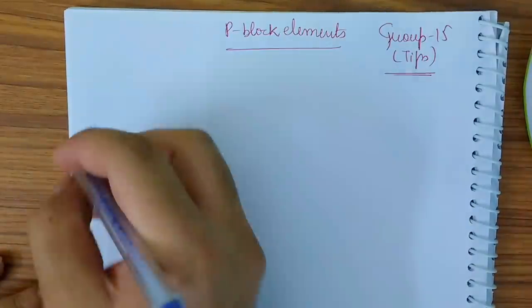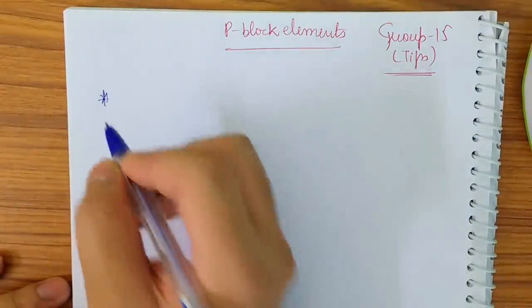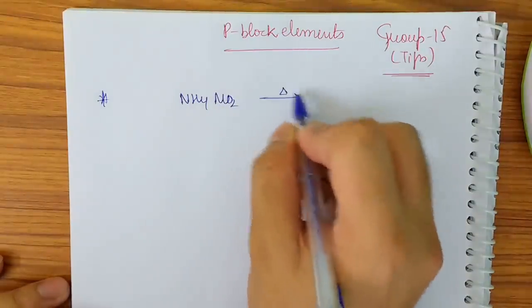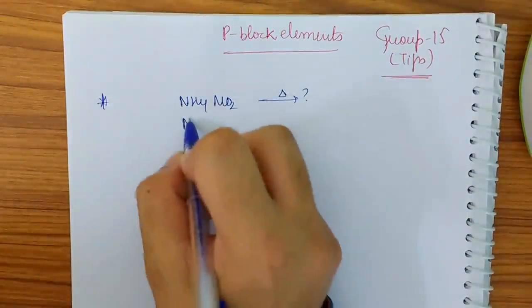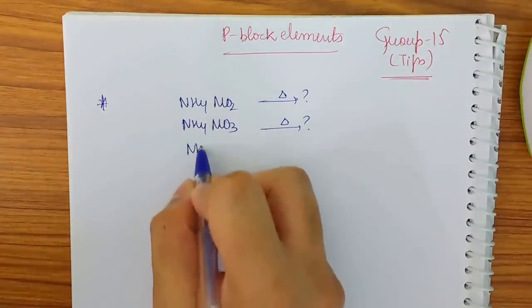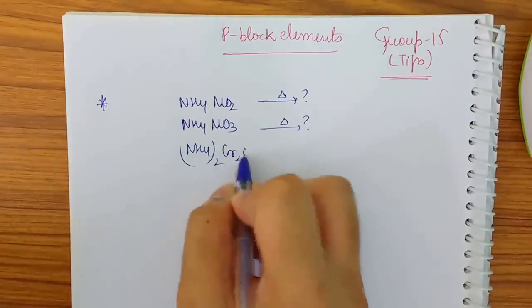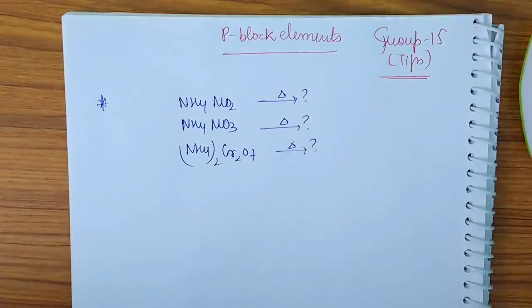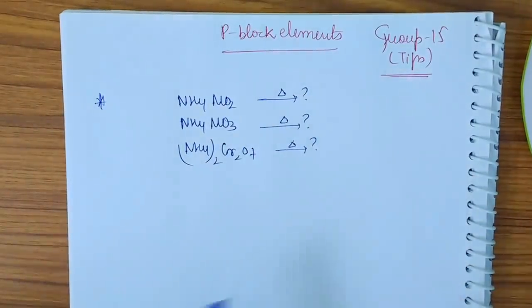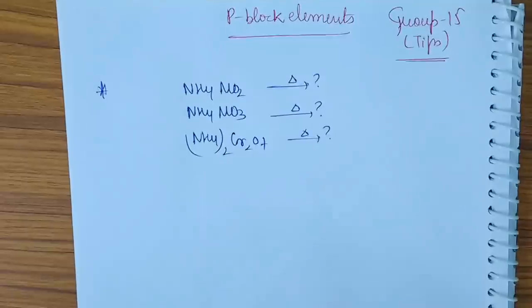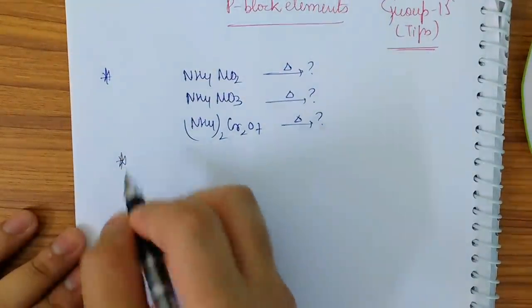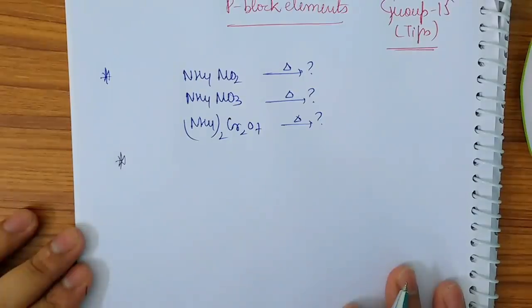Let me begin with some tips regarding this group. First of all, you must have seen questions where it's written NH4NO2 on heating gives what gas, NH4NO3 on heating gives what gas, (NH4)2Cr2O7 on heating gives what gas. Now what we actually do is learn the gases that this gives, in the preparation of N2 and N2O, etc. So let me tell you how to do these types of questions and how to remember. Whenever you see these types of questions, first of all, always remove H2O.